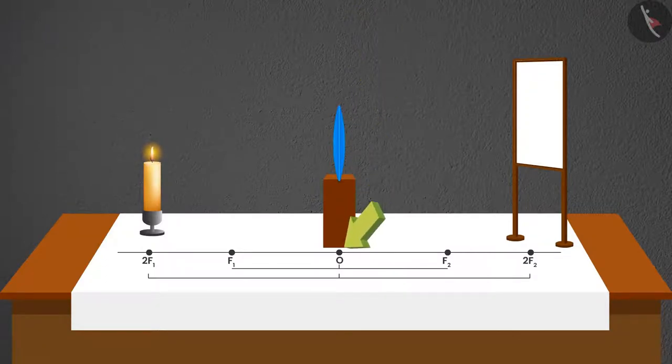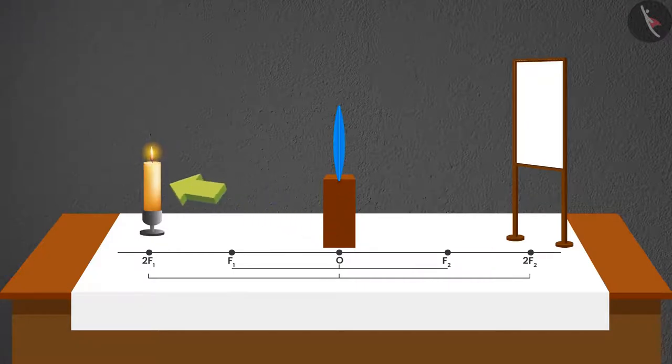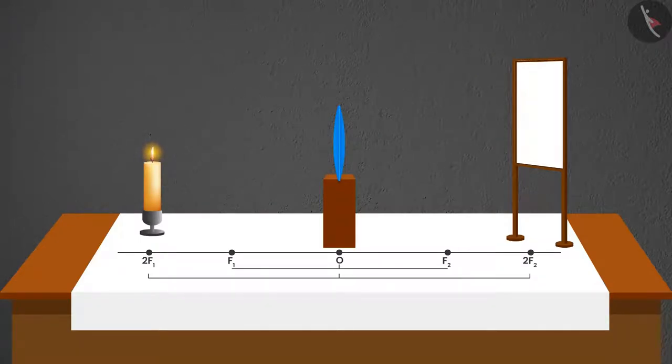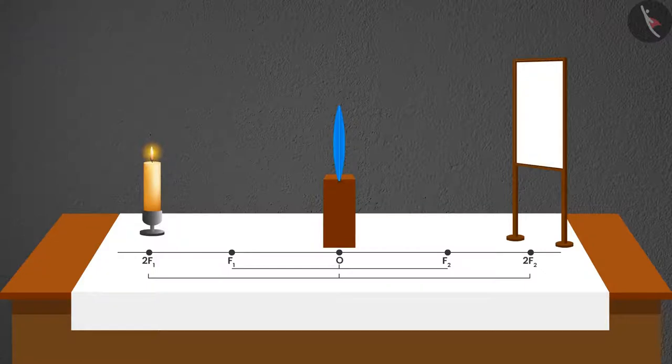Then place the lens on O and place the candle on one side of the lens and the screen on the other side. Like in the case of a concave mirror, the object was kept at six different positions. Here as well, six different cases can be made.